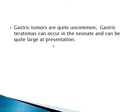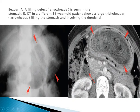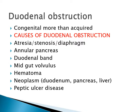Gastric tumors are quite uncommon, and gastric teratoma can occur in neonates and can be quite large at presentation. Gastric bezoars are retained gastric solid content that may result in gastric outlet obstruction. Bezoars may consist of hair, milk products, vegetable material, or chronically chewed solid material. Air or barium outlining the bezoar is diagnostic. On ultrasound, an echogenic arc over the bezoar is characteristic, and CT shows an air-containing mass not attached to the gastric wall. Most of the time there is some underlying psychological disorder.